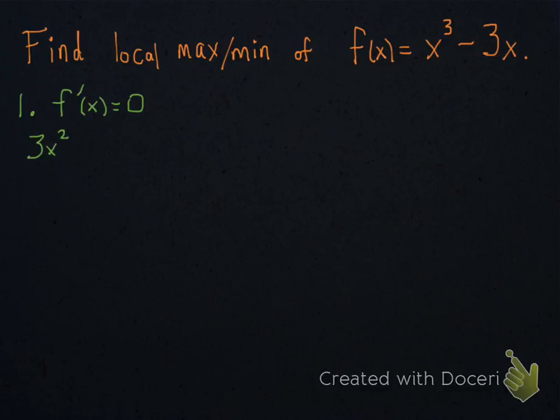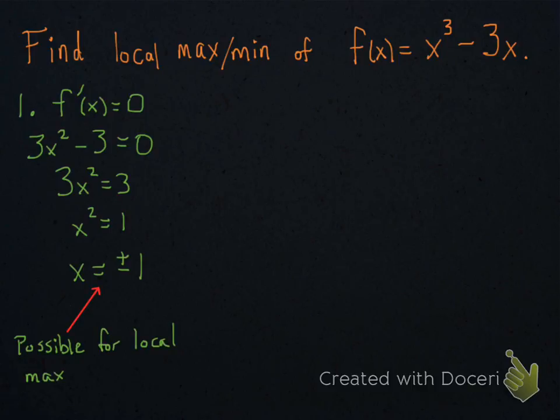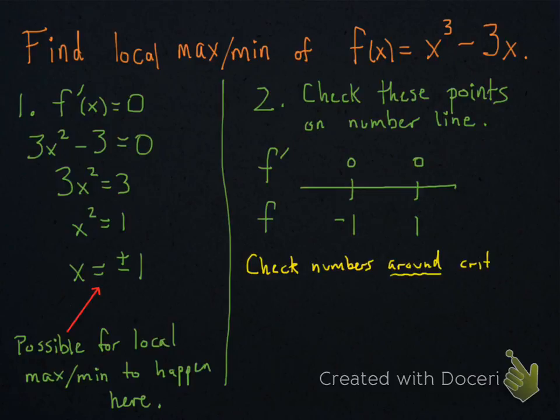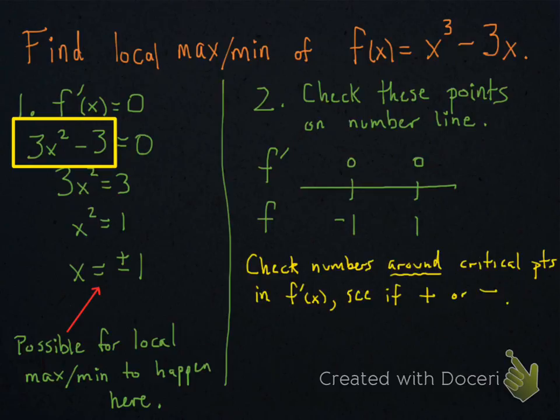You first find the critical points. So, you set the derivative equal to 0 and solve for x. Those give the possibilities for a local max and min. The second step is to check these points on a number line.